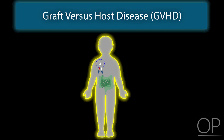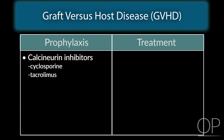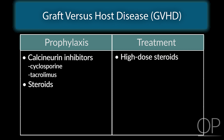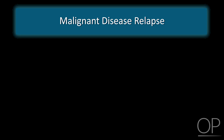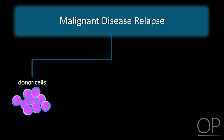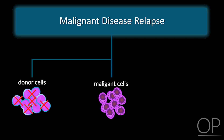Every patient except an identical twin receives GVHD prophylaxis with immunosuppressive agents — usually a calcineurin inhibitor such as cyclosporine or tacrolimus, often with steroids added. Therapies to treat GVHD are all based on anti-T cell function: high-dose steroids, antibodies such as ATG or CAMPATH, or immunomodulatory drugs affecting T cell metabolic pathways such as mycophenolic acid, all with profound effects on the immune system. Relapse is another major risk factor — if a patient relapses with malignant disease following transplant, they are at the greatest risk for infectious complications, as they have failing donor cells, overgrowth of malignant cells, and are usually receiving induction chemotherapy.